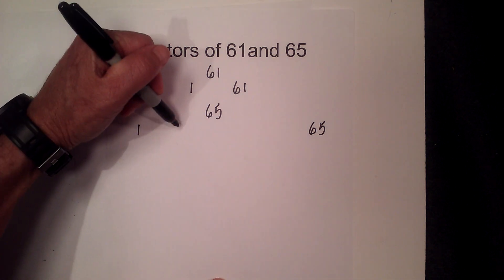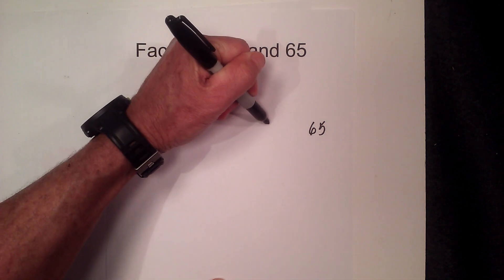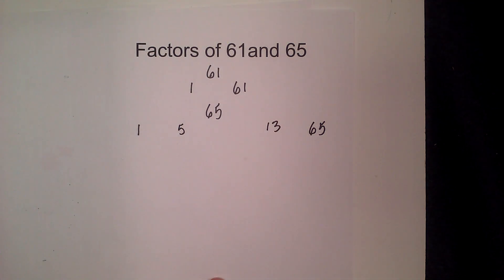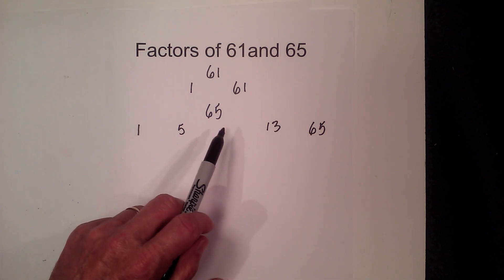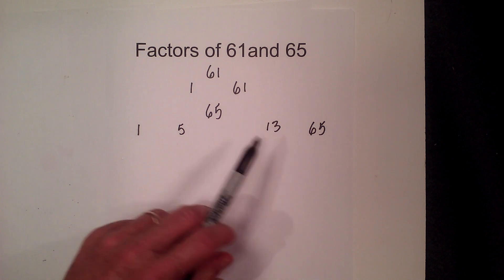First off, we have 5 times 13 equals 65, and then 6 will not go into 65, nor will 7, 8, 9, 10, 11, or 12.